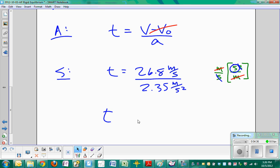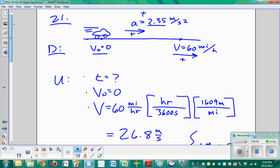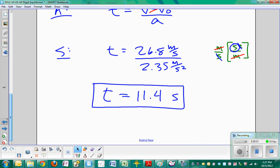So let's make that blue and be consistent. So T is going to be equal to 26.8 meters per second divided by 2.35 meters per second squared is equal to 11.4 seconds. So it takes the Volkswagen Beetle 11.4 seconds to accelerate from 0 to 60 miles per hour. I've got to say that's kind of slow.